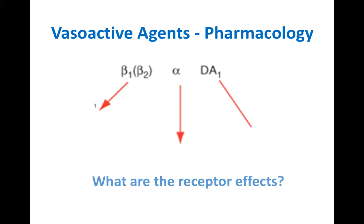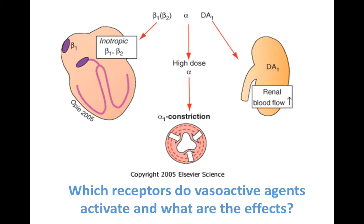What are the effects when you bind these receptors? Beta-1 mostly has inotropic effects — it increases the contractility of the heart, makes it beat stronger, and the heart rate can also increase. Beta-2 in general doesn't have a lot of direct activity on the heart itself; it's more of a vasodilatory effect in the bronchioles and also in the vascular blood vessels.